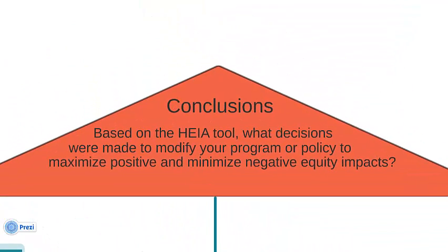Remember that the HEIA impact assessment is a living document. As you move forward with each step, keep coming back to the template and update the information as needed. After you've implemented your mitigation strategies, reflect on the changes that were made to the program or policy and how those changes contributed to health equity.